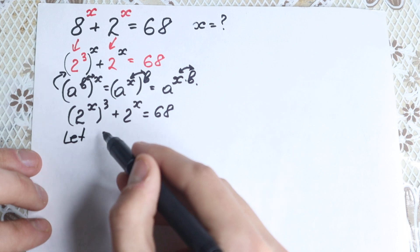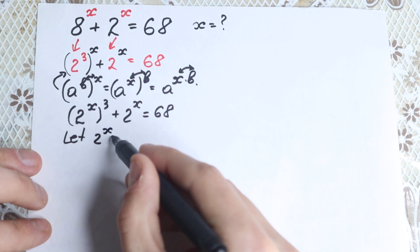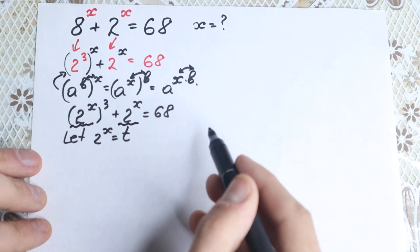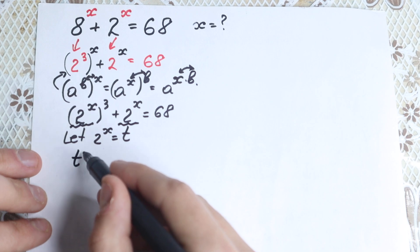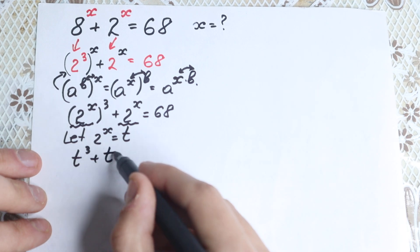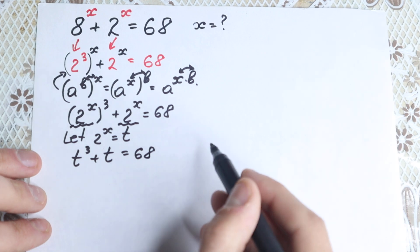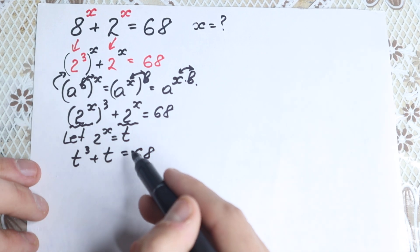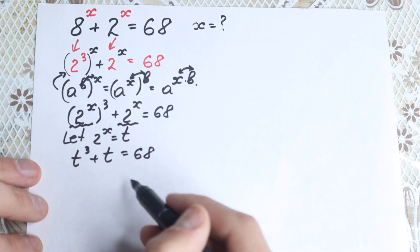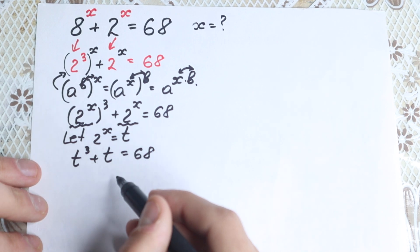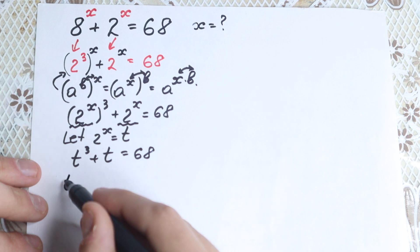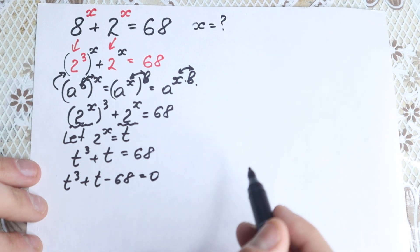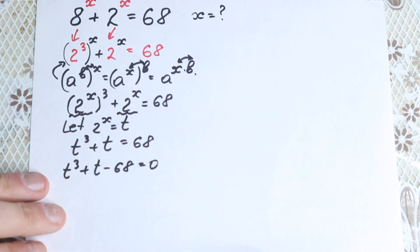There's one really interesting moment. If we use the substitution t = 2^x, then this expression becomes t cubed plus t equals 68. Bringing 68 to the left-hand side, we get t cubed plus t minus 68 equals zero. This is our cubic equation.